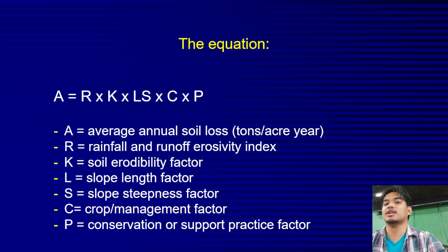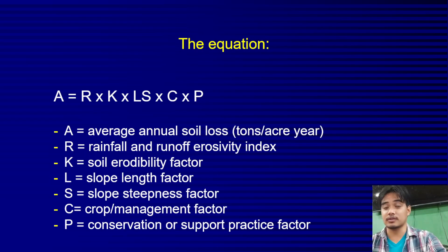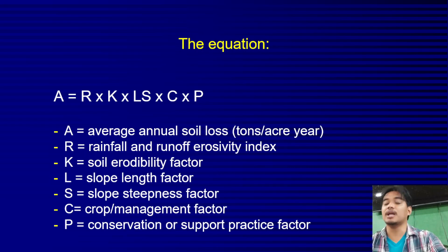In the USLE equation, the value we solve for is A — the average annual soil loss. The unit of A is tons per acre per year.